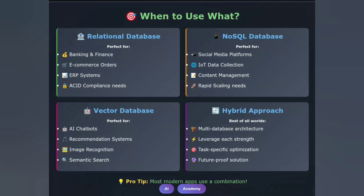Here's your practical guide to choosing the right database. Choose relational databases when you need ACID compliance — banking and finance — when data has clear relationships and structure, when complex joins and transactions are required, or when data integrity is non-negotiable. Perfect for banking systems, e-commerce platforms, and ERP systems. Choose NoSQL databases when you need flexible, evolving schemas, handling diverse data types, rapid scaling requirements, or real-time applications.